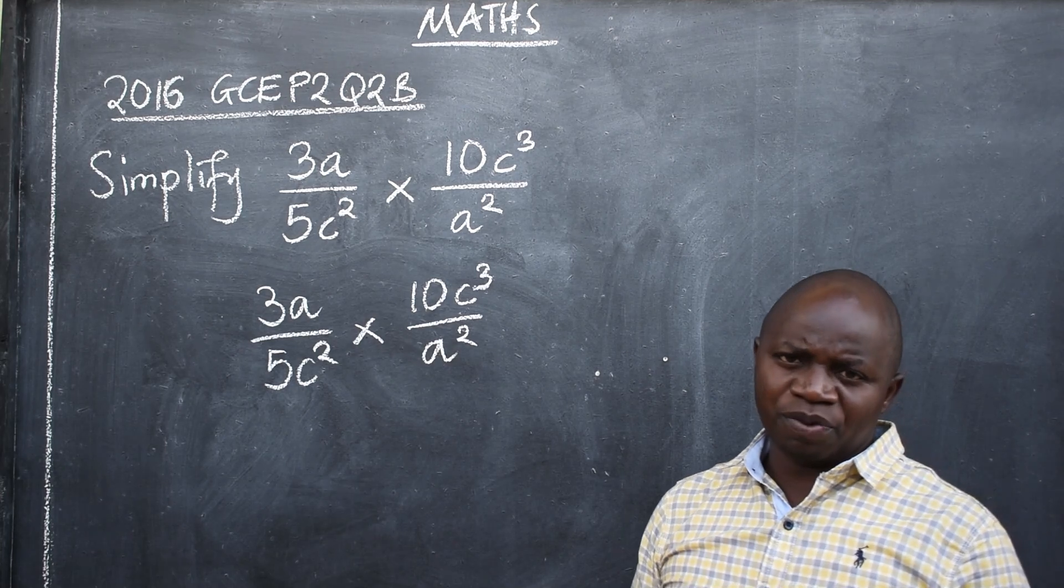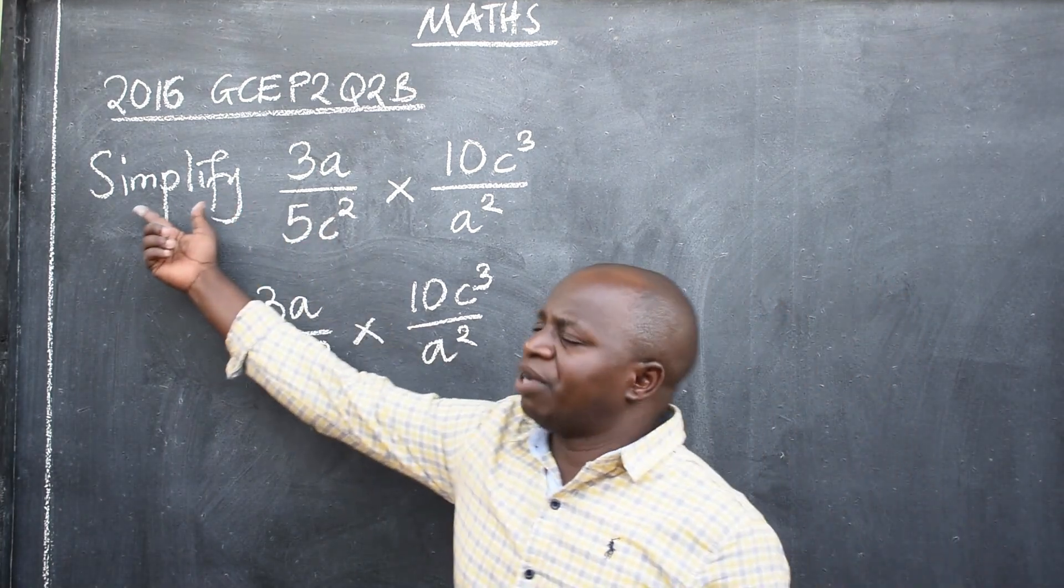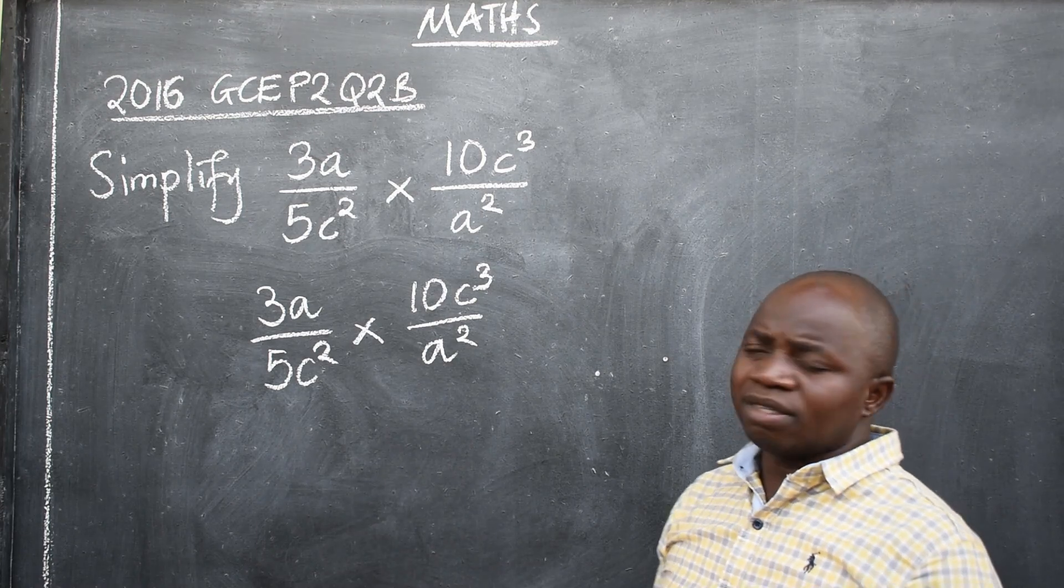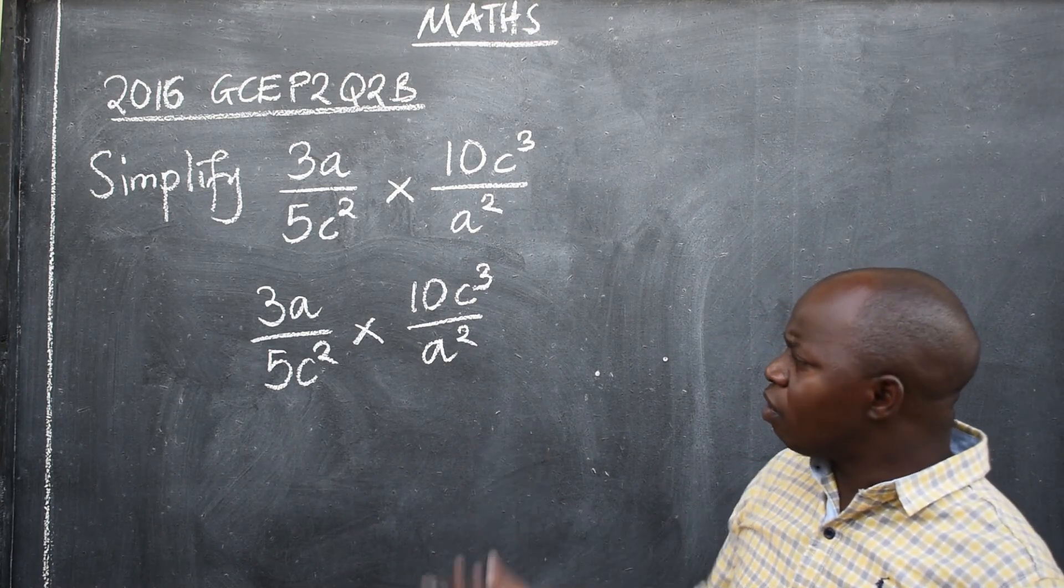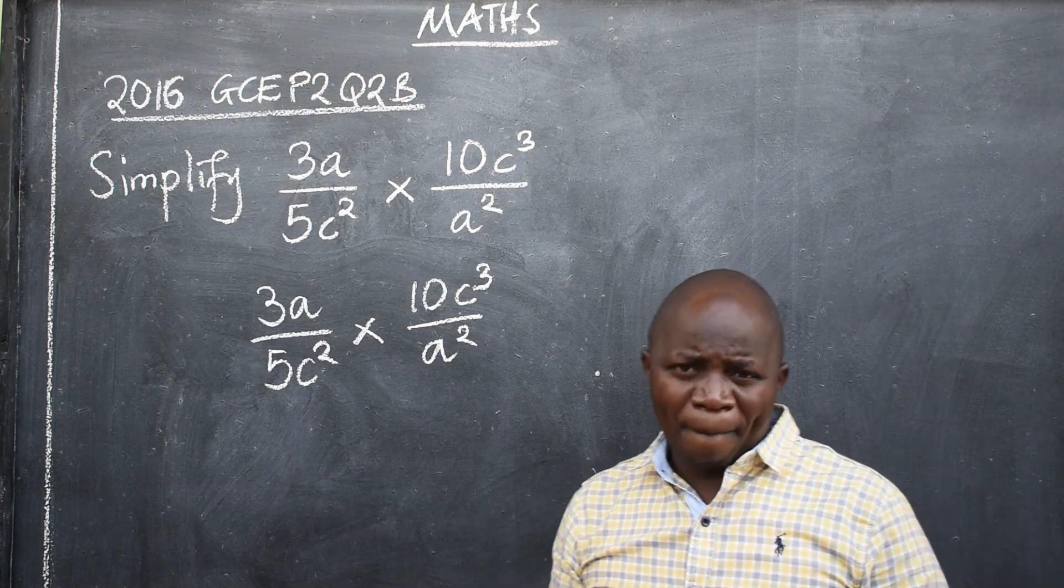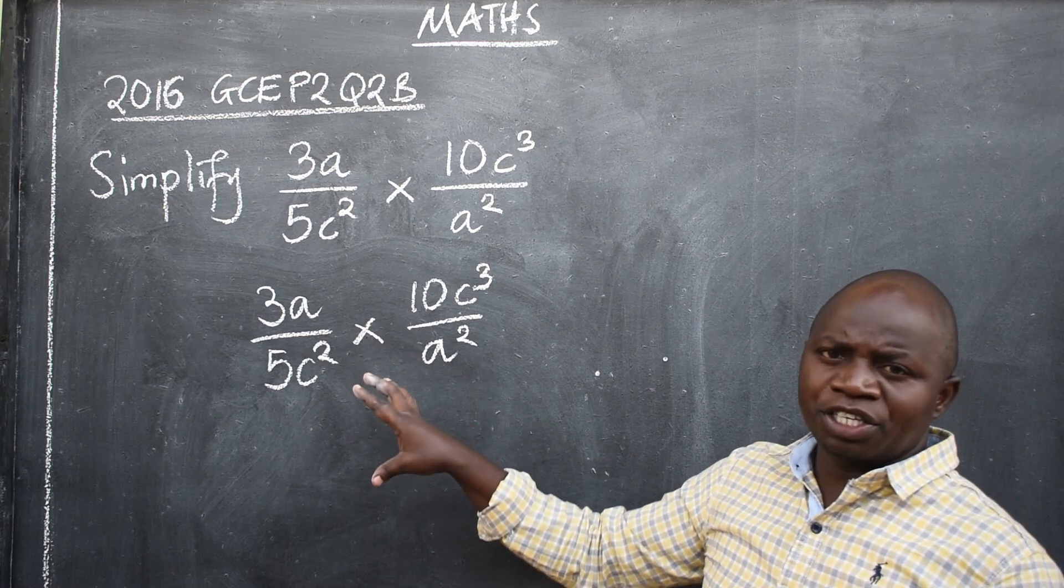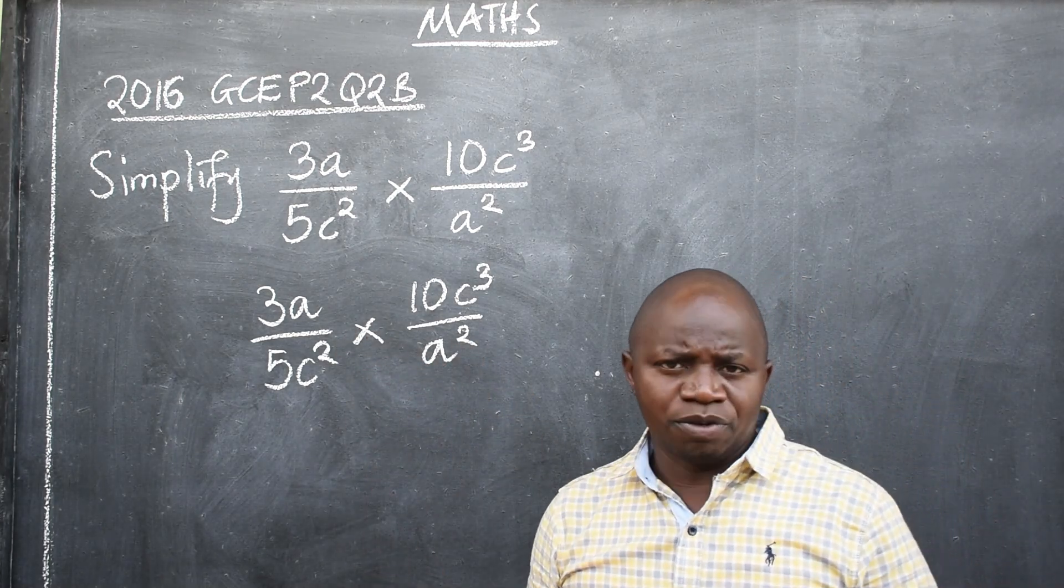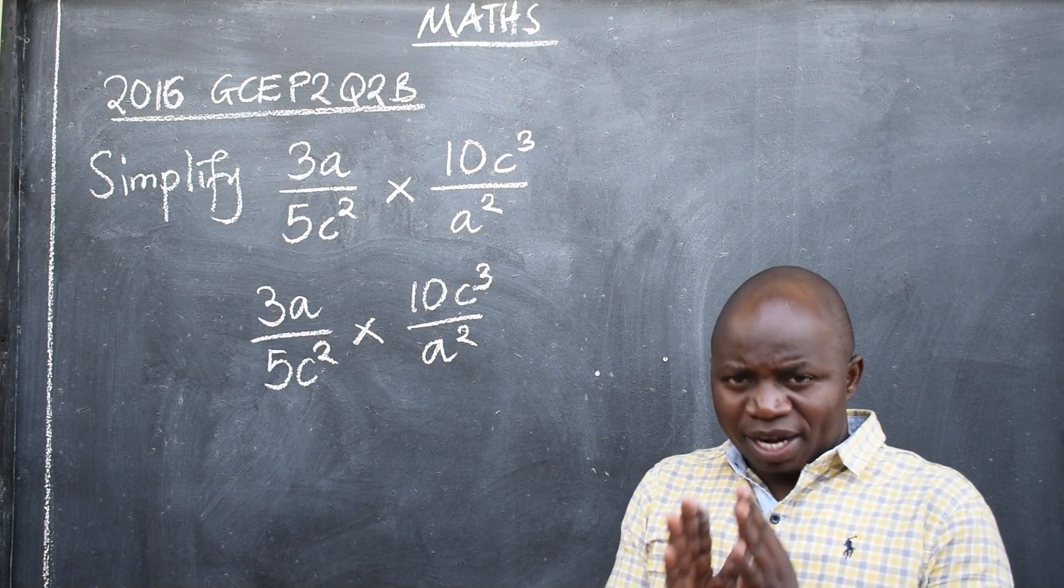Now that we have copied the question, what next? We start simplifying, reducing the number of times, also making it simple. We have a combination of numbers and variables. So we are going to start with numbers.